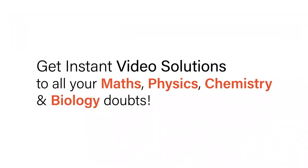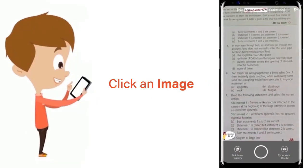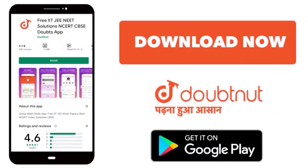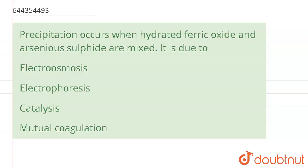With Doubtnet, get instant video solutions to all your maths, physics, chemistry, and biology doubts. Just click the image of the question, crop the question, and get instant video solution. Download Doubtnet app today. Hello, the question says precipitation occurs